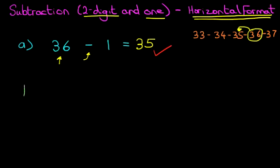Now, in the second example, we have 48 minus 1. 48 minus 1. Now, again, we can write the numbers down from, say, 45 to 50 and then count back 1. However, we're going to do this slightly differently.